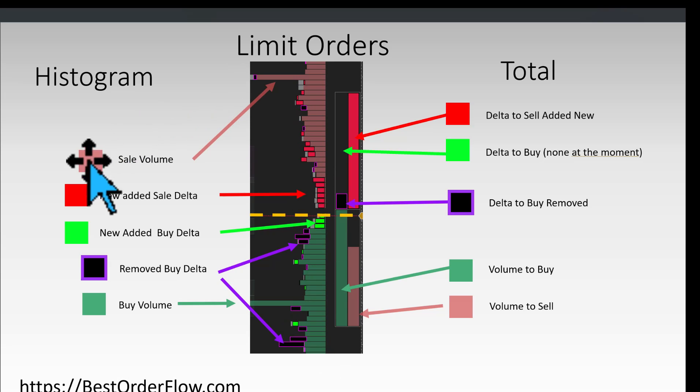Let's see what the color codes mean for the histogram. The dull red is the sale volume. The bright red is new added sale delta. The same for the greens: this is the buy volume and the bright green is newly added buy delta. Orders in black are orders that are removed on both sides.